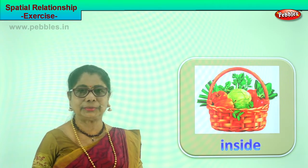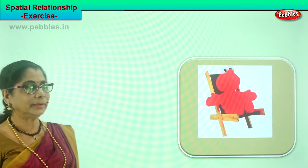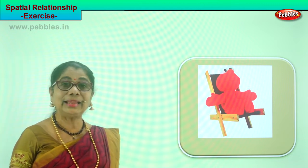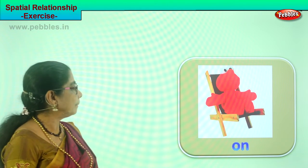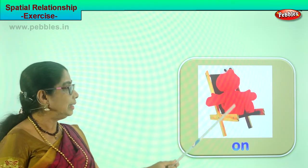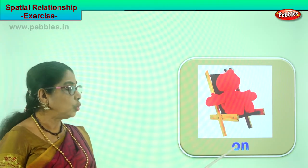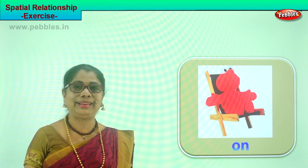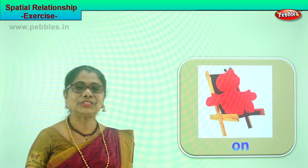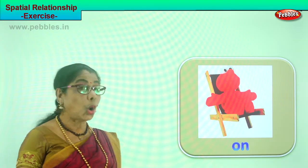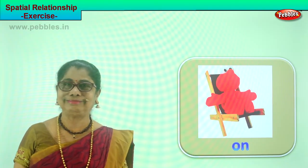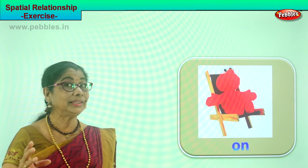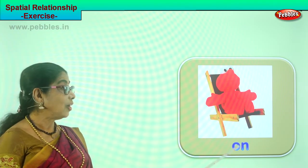Let's look at another picture. What do we have here? We have a teddy. Where is the teddy sitting? Sitting on the chair. The little toy is being placed on the chair — the little girl is playing, so she took the teddy and put it on the chair. What are we learning? Spatial relationships — on the chair.